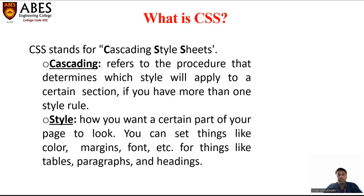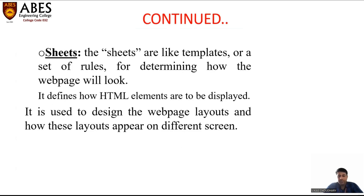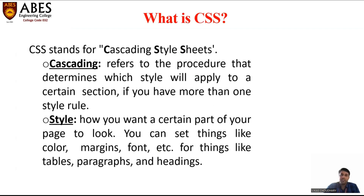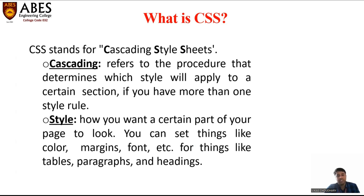Cascading Style Sheet is divided into three words: Cascading, Styles, and Sheet. What is the meaning of cascading? Cascading means it is a process of applying styles like colors, margins, fonts, and different types of colors used in headings, backgrounds of tables, paragraphs, and body backgrounds. These are the different styles we can use in our style sheet.